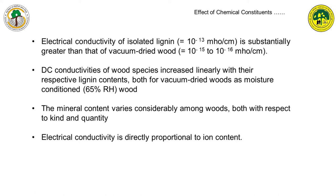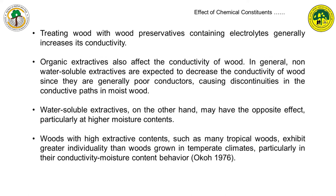Mineral content varies considerably among woods, both with respect to kind and quantity, depending on growth parameters. Species grown in coastal or desert areas can have higher salt content. When the salt or electrolyte content increases in the wood, conductivity can be better and resistance can be lower — electrical conductivity is directly proportional to the ion content. If wood is treated with various preservatives or fire retardant chemicals, they can also affect the electrical properties, since the presence of ions can improve electrical conductivity and reduce resistivity.